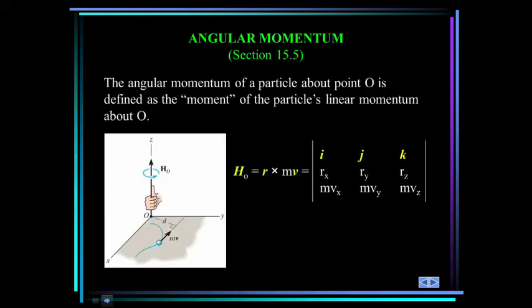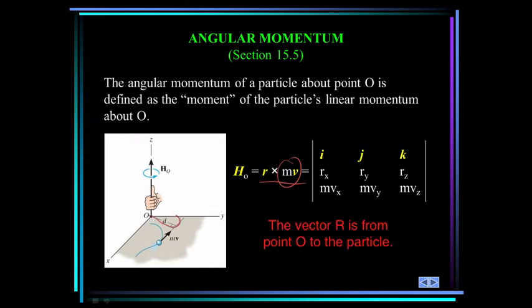Next, we went over angular momentum, similar to linear momentum, but it's r cross mv. So this is the linear momentum of a particle. If you cross it with r, the distance away, and that's a perpendicular distance away from some point O.